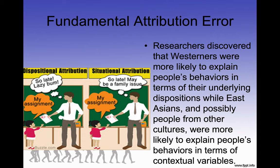Researchers discovered that Westerners were more likely to explain people's behaviors in terms of their underlying dispositions, while East Asians — and possibly people from other cultures — were more likely to explain behaviors in terms of contextual variables. So an Asian way of looking at a situation focuses on context, while a Western way focuses on the attributes of the individual.